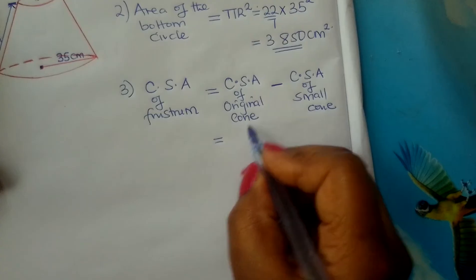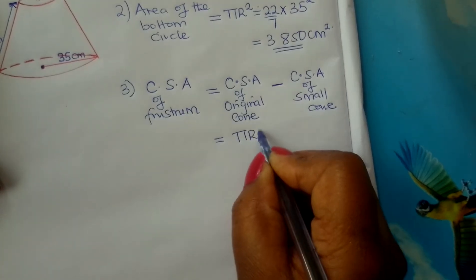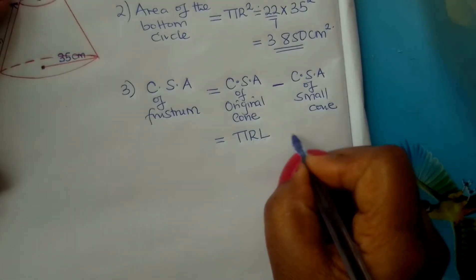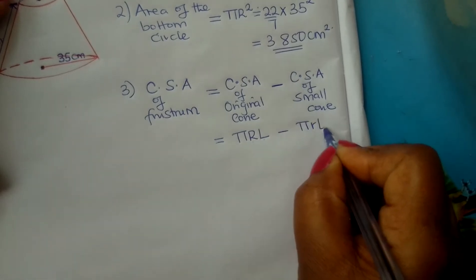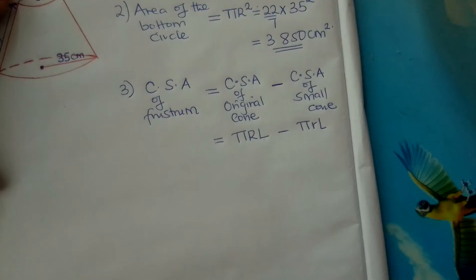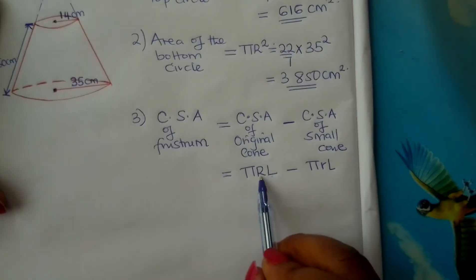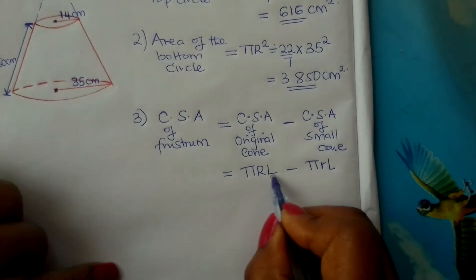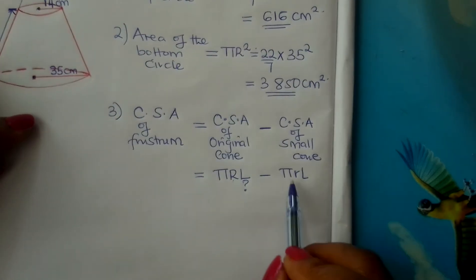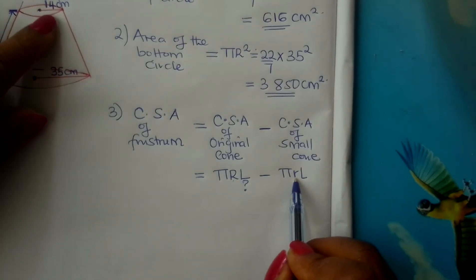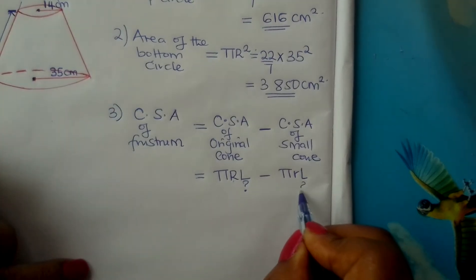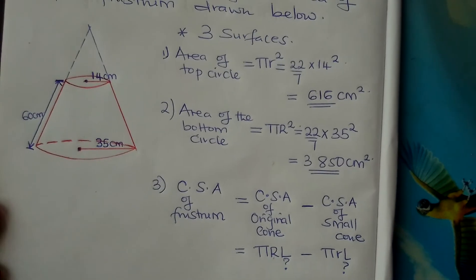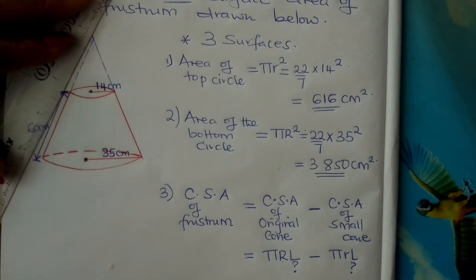The curved surface area of a cone is given by π R L, using capital letters for the original big cone, minus π r l using small letters for the small cone. Do we have capital R? Yes, it is 35. Do we have capital L? No. Do we have small r? Yes, it is 14. Do we have small l? No. So we need to calculate both slant heights.